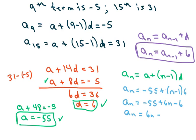Why did I just say 59? Is this supposed to be 53? Yeah, this is supposed to be 53. Sorry about that. So it's 53, 53 — so it's going to be minus 61.